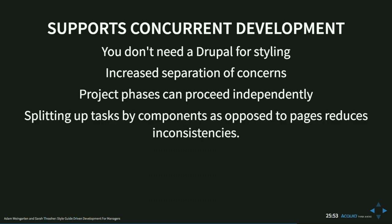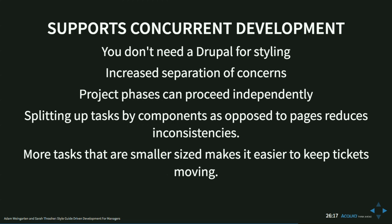This separation lets front-end people focus on front-end while back-end people work on back-end. You have fewer blockers and fewer dependencies to juggle in JIRA. Splitting tasks by components also reduces inconsistencies across pages — on large teams where one developer works on the homepage and another on the news section, there can be subtle differences in things like titles that aren't easy to catch. Smaller tasks allow you to move things across the board more quickly, QA things separately, keep QA and UAT people saturated. We don't want to work late nights and weekends.